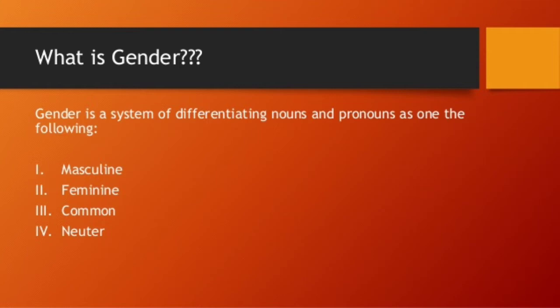We are going to differentiate nouns under these four categories. Masculine means having a male quality. Feminine means having female qualities. Common refers to both male and female. Neuter represents non-living things — for example, pain: we cannot differentiate pain into male or female.